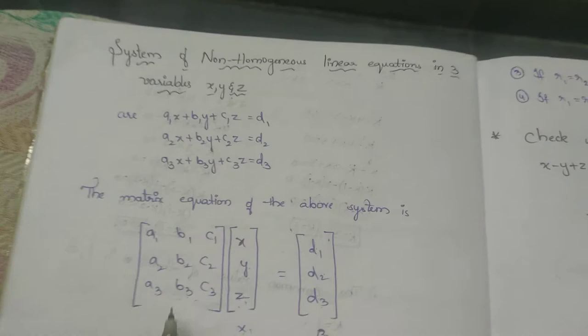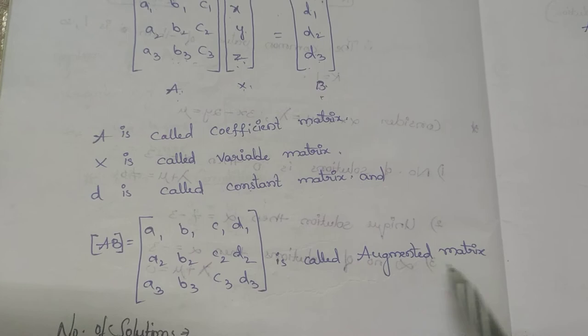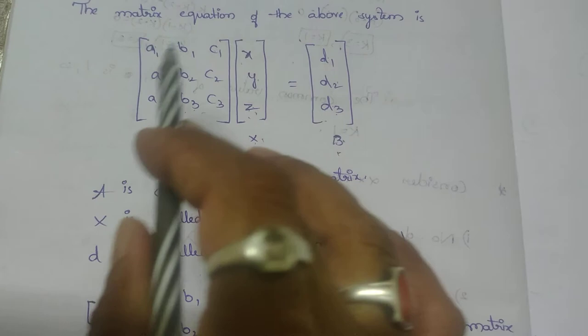The augmented matrix [A|B] is written by placing the coefficient matrix A and appending the constant matrix B as the last column. This is called the augmented matrix.